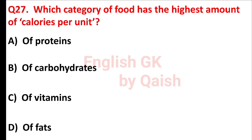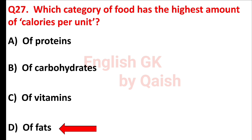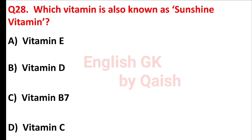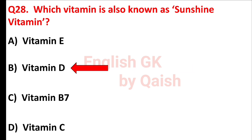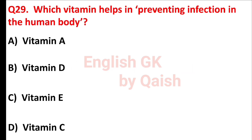Which category of food has the highest amount of calories per unit? Answer is option D, fats. Which vitamin is also known as sunshine vitamin? Answer is option B, vitamin D. Which vitamin helps in preventing infection in the human body? Answer is option A, vitamin A.